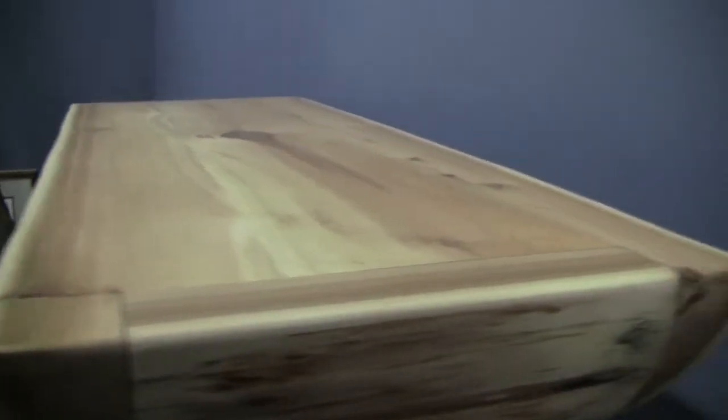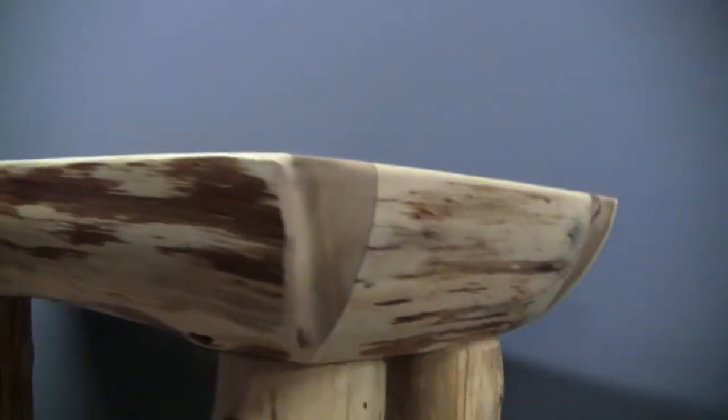The sofa table features a two-inch thick solid top with a log edging. The log edging, as you can see, gives the top a really nice thick looking appearance.